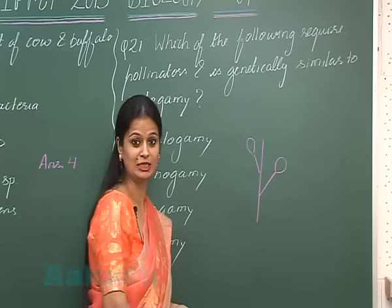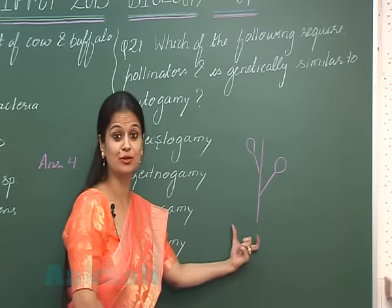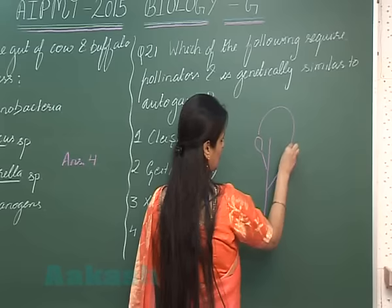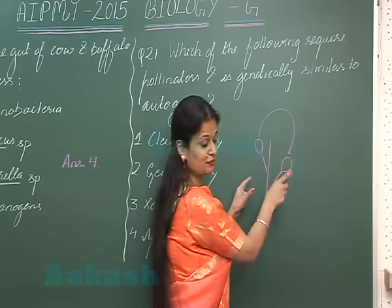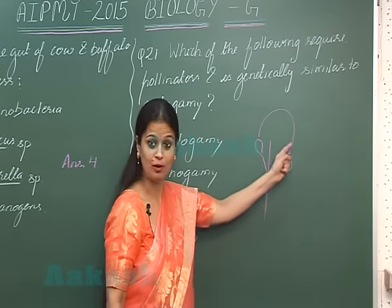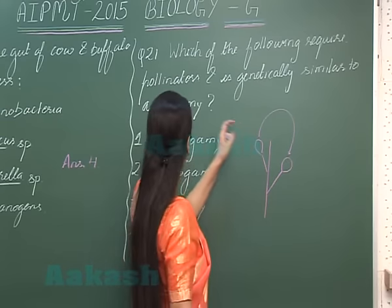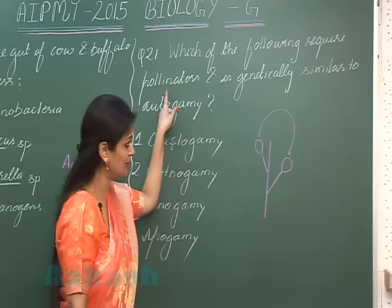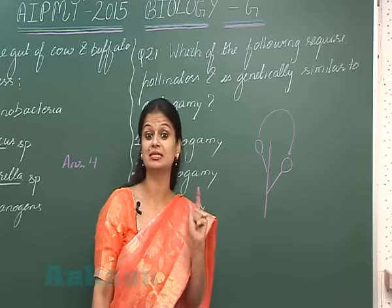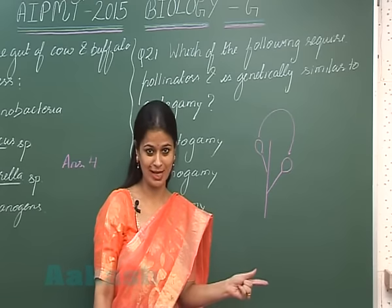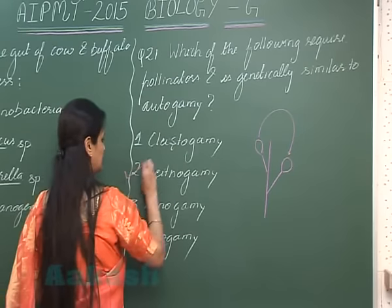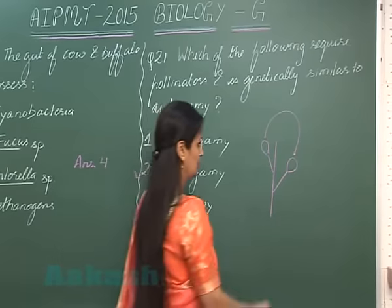Now coming to geitonogamy. In geitonogamy, there is involvement of two flowers for pollination, but these two flowers are present on the same plant. There is transfer of pollen grain from anther to the stigma of different flowers which belong to the same plant. So for the transfer of pollen grain, there is a requirement of pollinators or ecological agencies, but both flowers belong to the same plant, so they are genetically similar. Pollinators are required, but genetically it is self-pollination — so this is the right option.